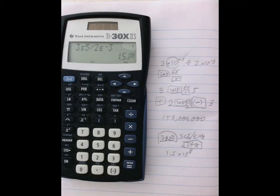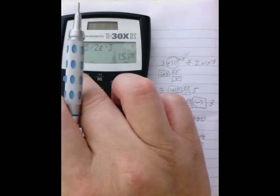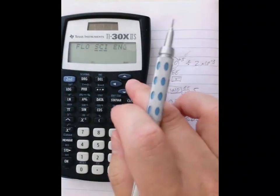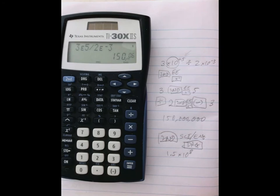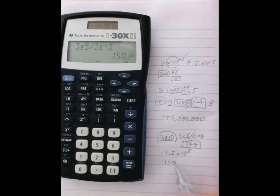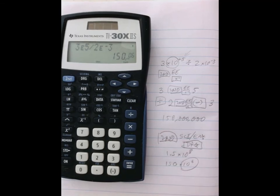But that may be a little hard to do, so the engineering notation simplifies that. Let's go back to second DRG and arrow to engineering notation. Now the answer is 150 times 10 to the sixth. It's easier for most people to recognize that 10 to the sixth with six zeros is million, so the answer is 150 million.